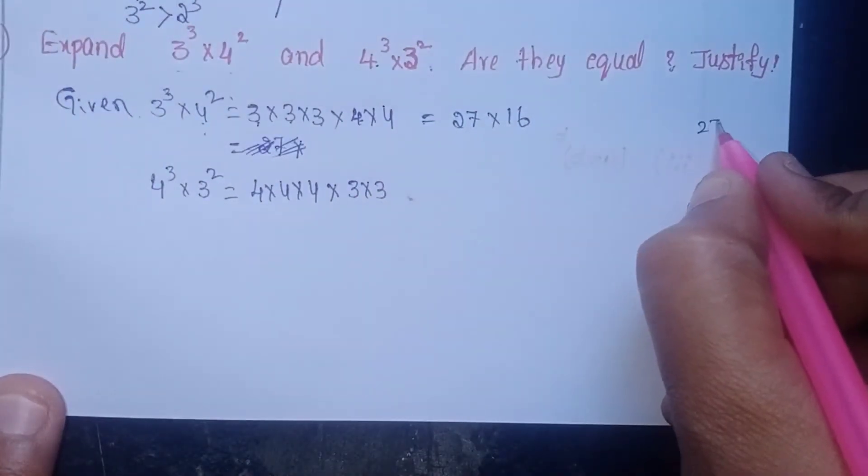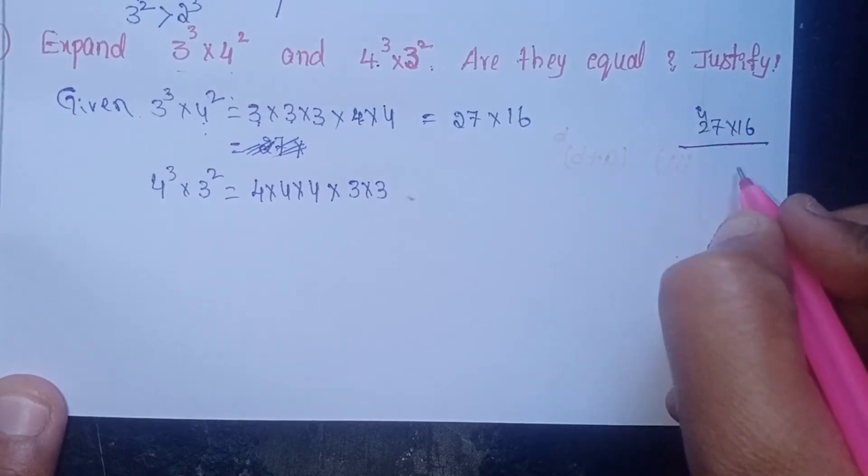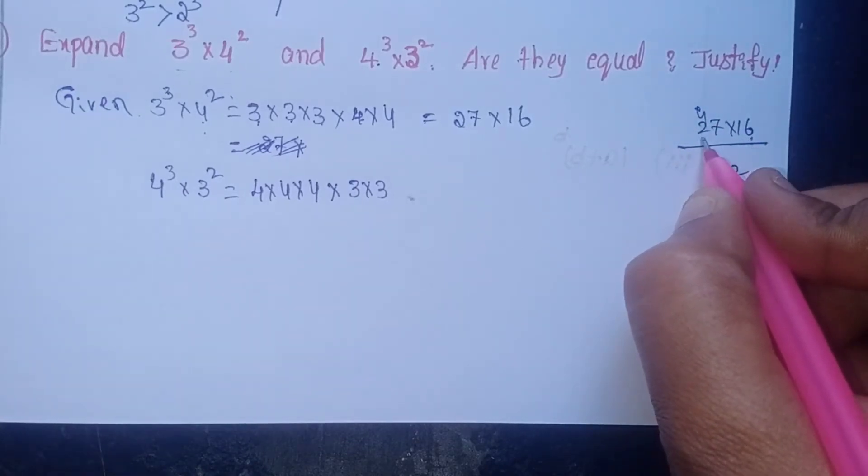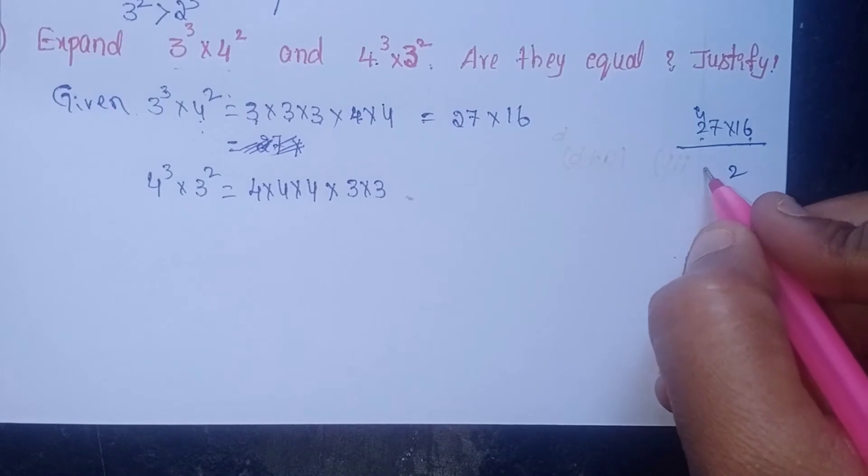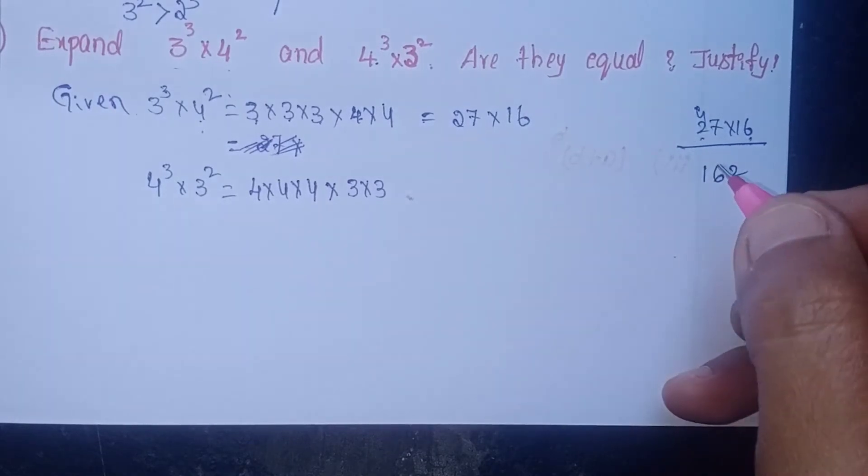27 into 16: 6×7 is 42, 6×2 is 12, 12 plus 4 is 16. So 432.